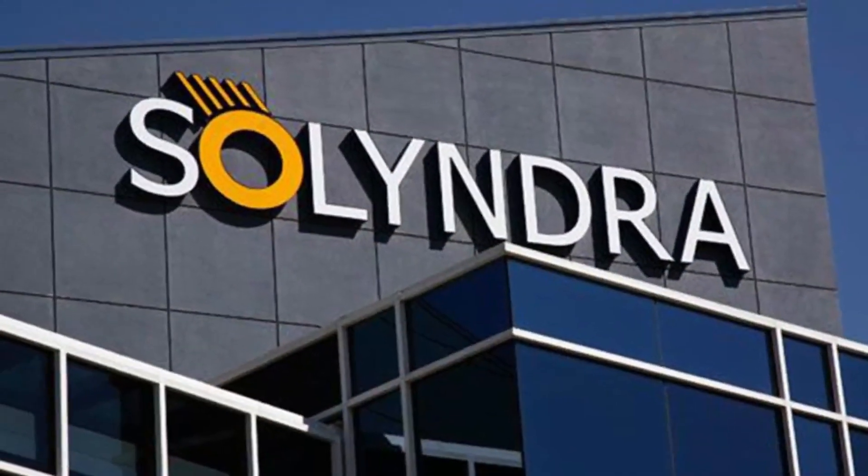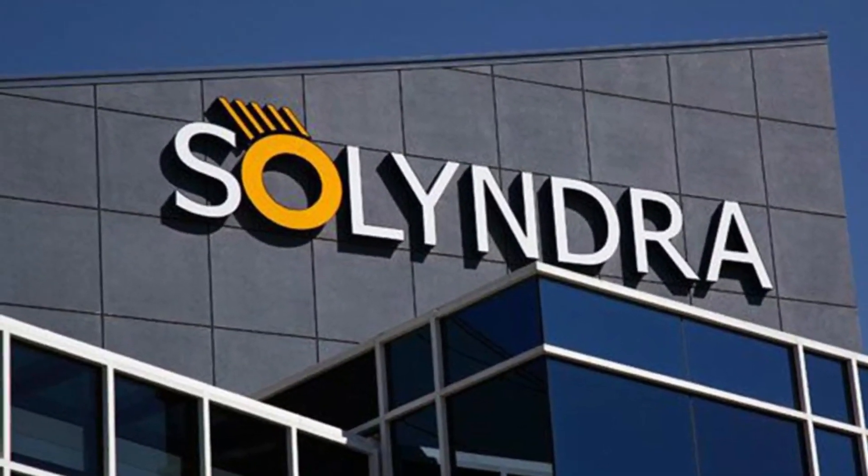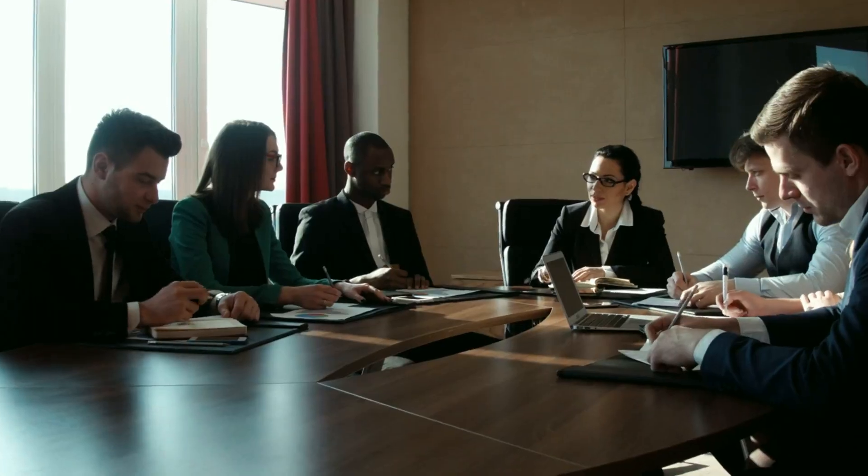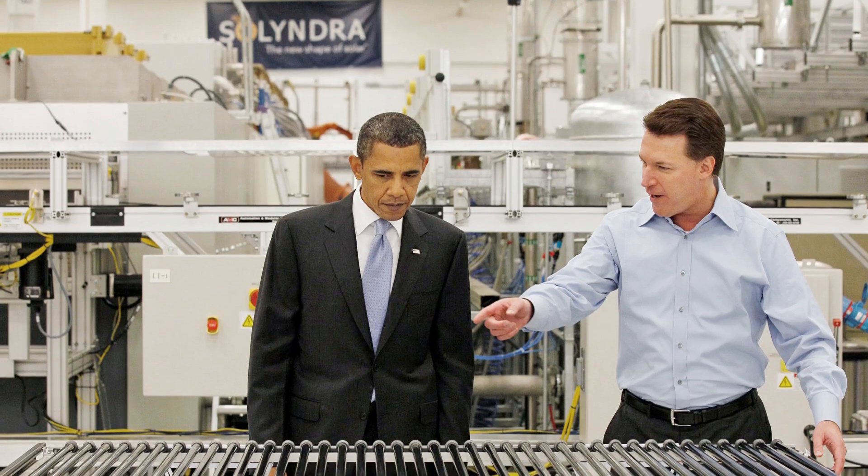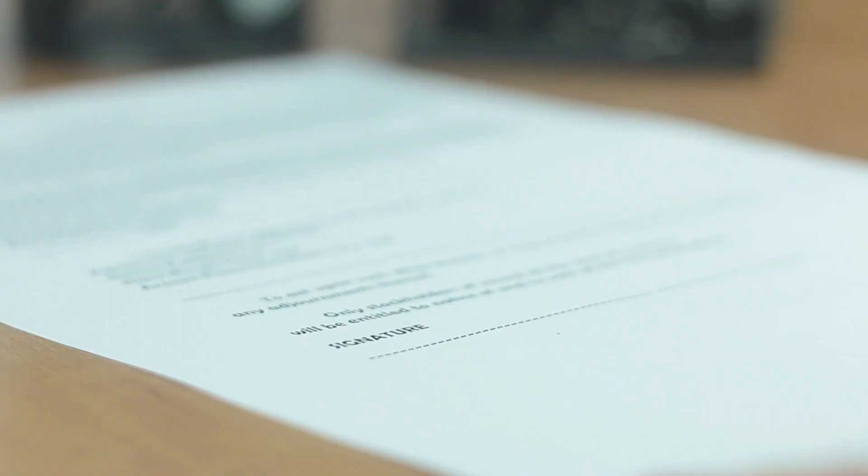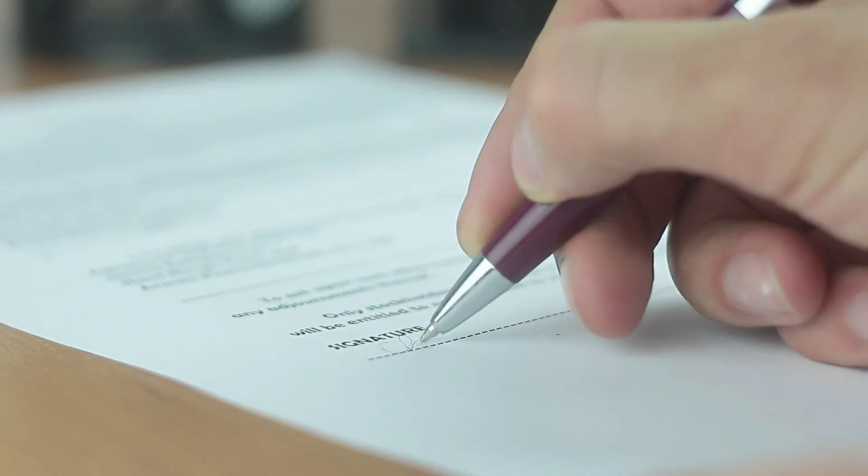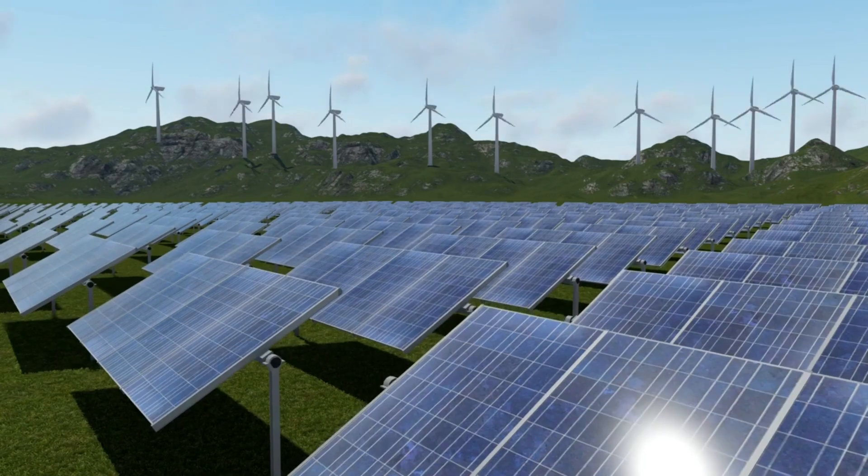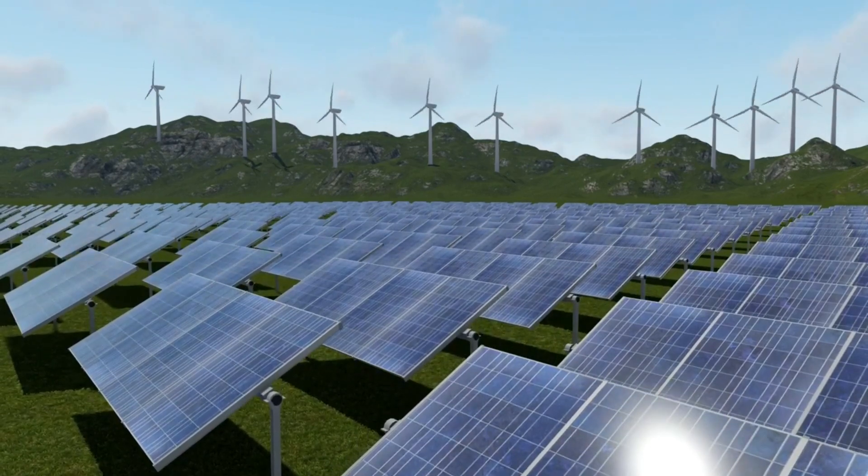The sudden failure of Solyndra, a promising solar panel manufacturer, sent shockwaves through the clean energy sector and became one of the most talked about business failures of the decade. Once backed by the Obama administration, the company filed for liquidation in 2013, leading to serious questions about what went wrong, and could the collapse of a single solar startup bring down an entire industry?